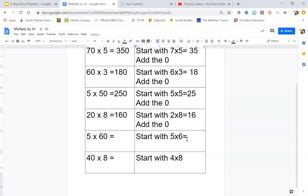All right, 5 times 60. So we're going to start with 5 times 6, which is 30. Then we want to add the 0 to the end, and that's going to end up being 300.